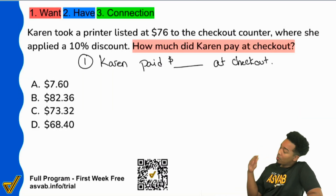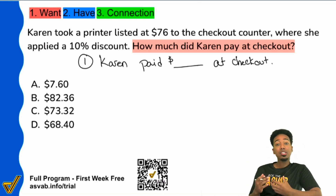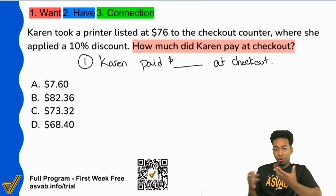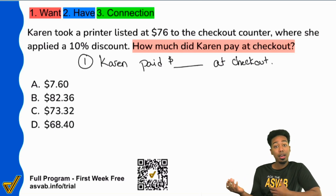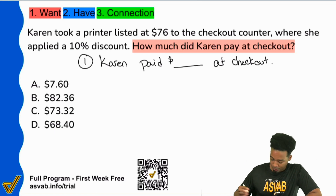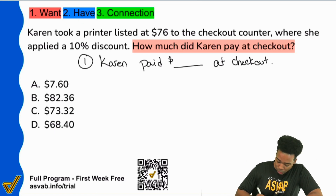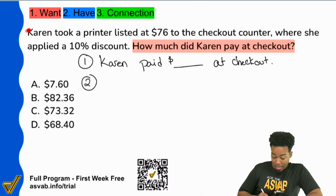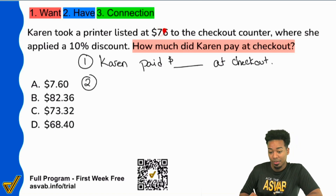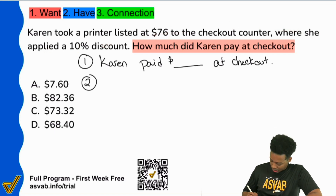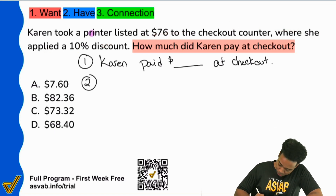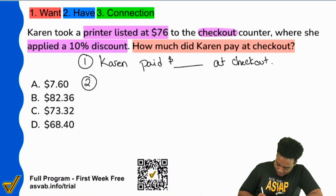We want to know how much Karen paid at checkout, so something must have happened with the item. Step two — what do we have? Karen took a printer listed at $76 to the checkout counter, where she applied a 10% discount. So the printer was listed at $76, and at checkout we applied a 10% discount — minus 10%.